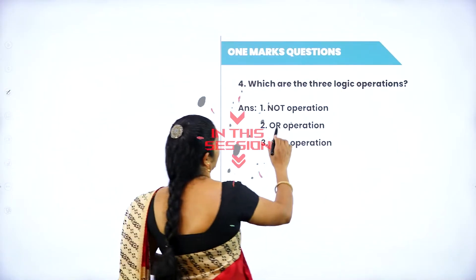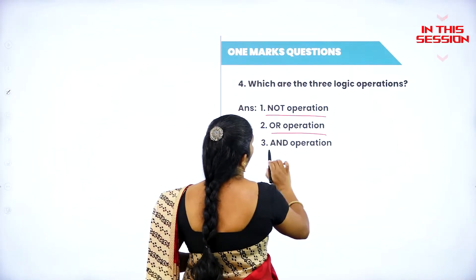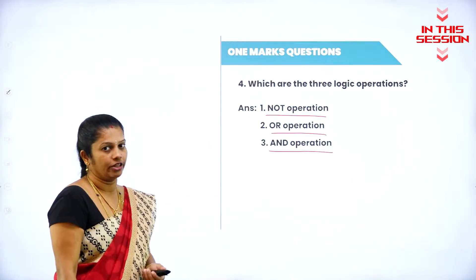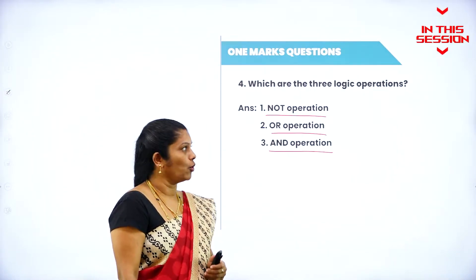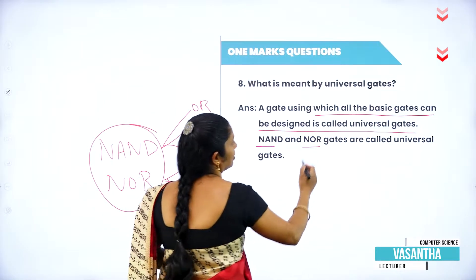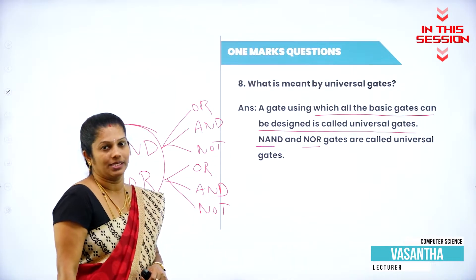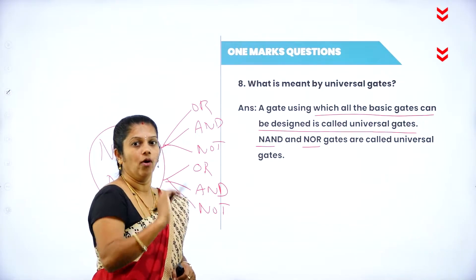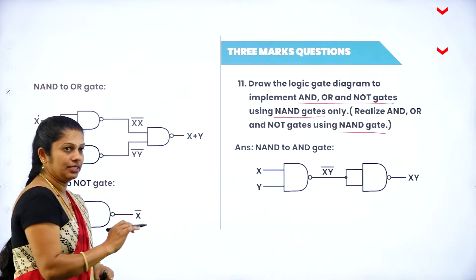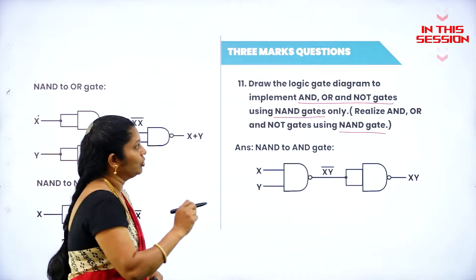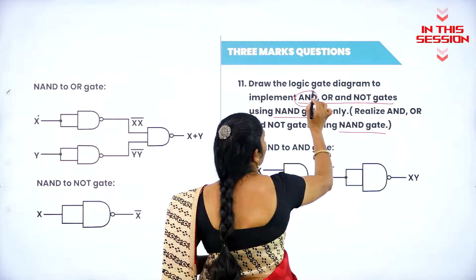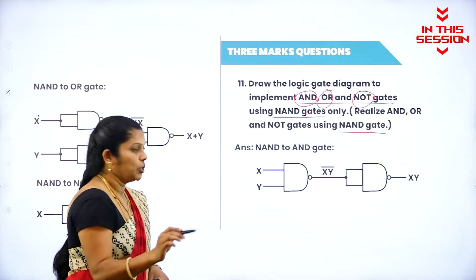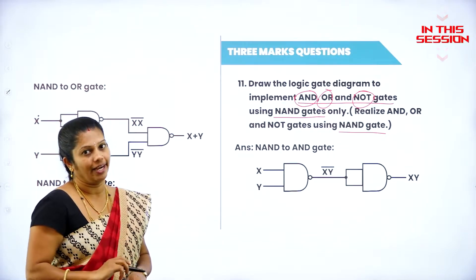When it comes to operations, we have three types: NOT, OR, as well as AND. These are the three basic operations in logic gates we can perform. NAND as well as NOR gate are called universal gates because by using them we can construct all the basic gates — AND gate, OR gate, as well as NOT gate — all three, using only the symbol of NAND gate.